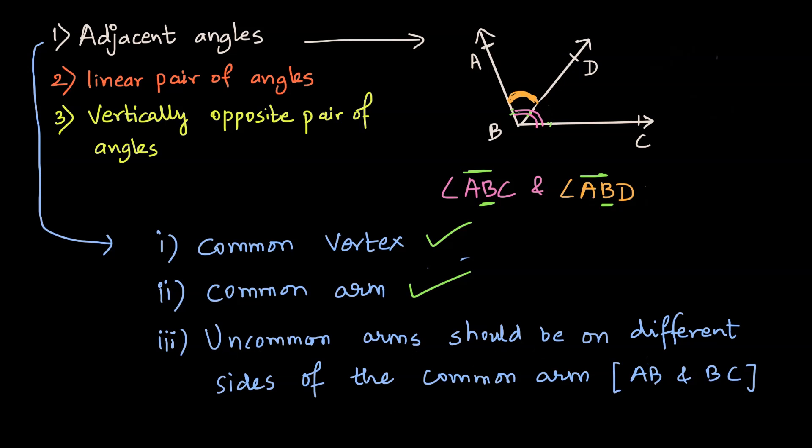Let's check whether the third point is satisfied or not. Uncommon arms should be on different sides of the common arm. So now AB is the common arm where this one and this one, which is BD and BC, are the uncommon arms, but they are on the same side of arm AB. And that is why the third point is not satisfied. And that is why these two angles are not adjacent.